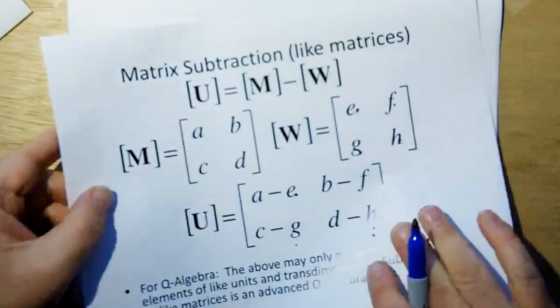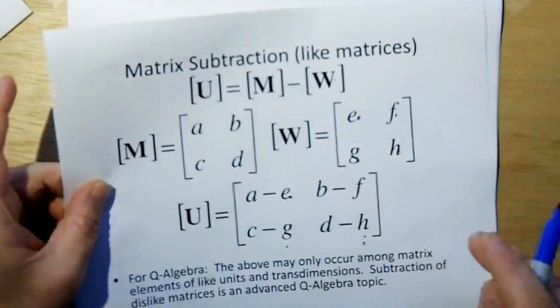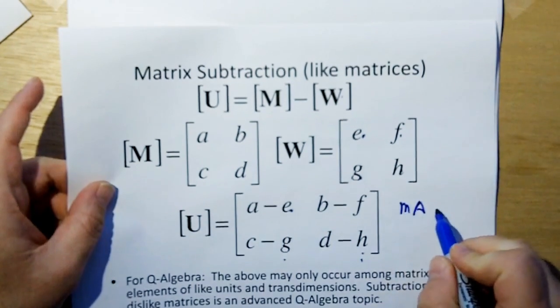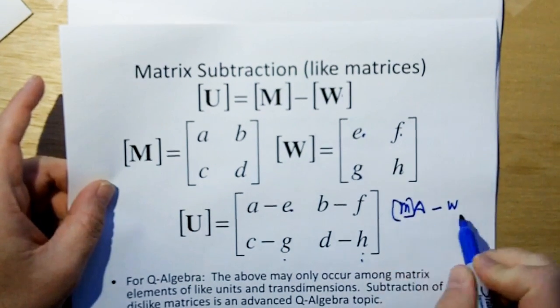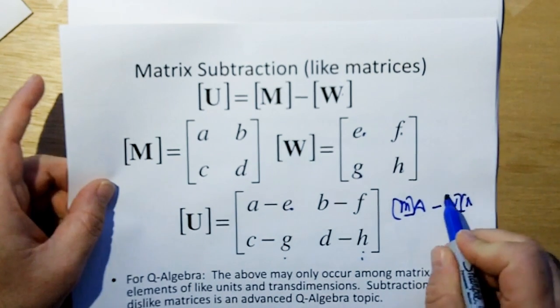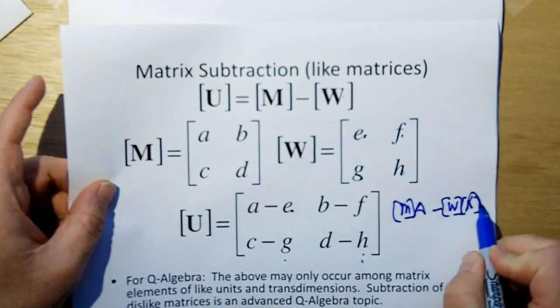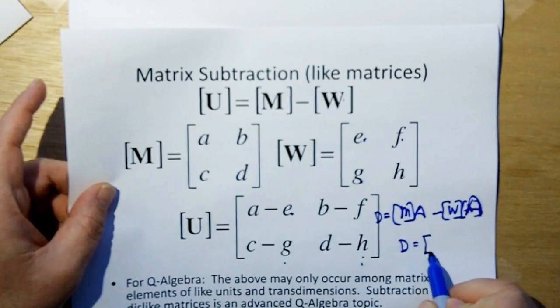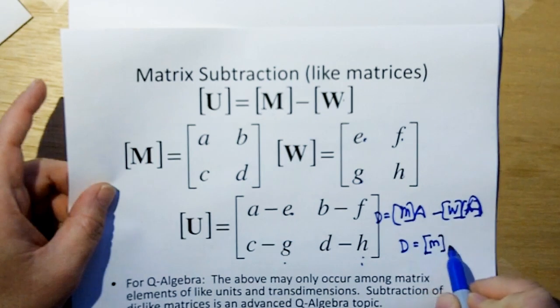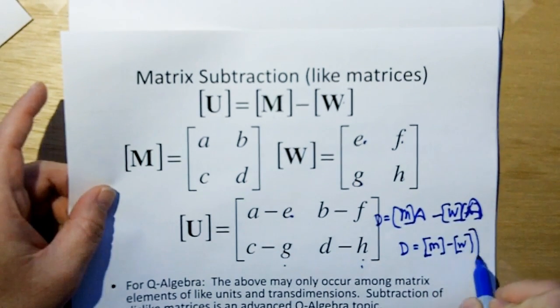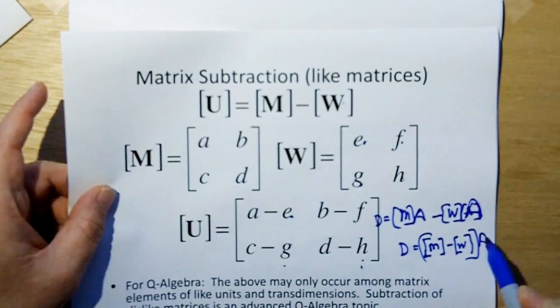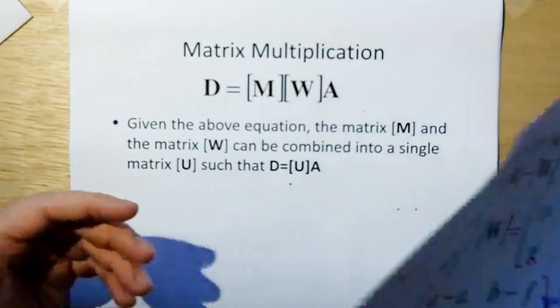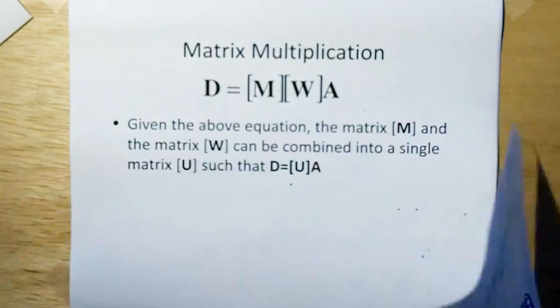They have to be like matrices too. In other words, these have to have the same trans dimensions before you can add them. Matrix subtraction works the same way. You just subtract. If it's M minus W, you take the A subtract the E, take the B subtract the F, take the C subtract the G, take the D subtract the H, and put them in the appropriate locations of the resultant matrix. Instead of doing A times M minus W times A to get our result D, we're saying that D can also be found by M minus W times A. We're just doing it in matrix space instead of vector space.